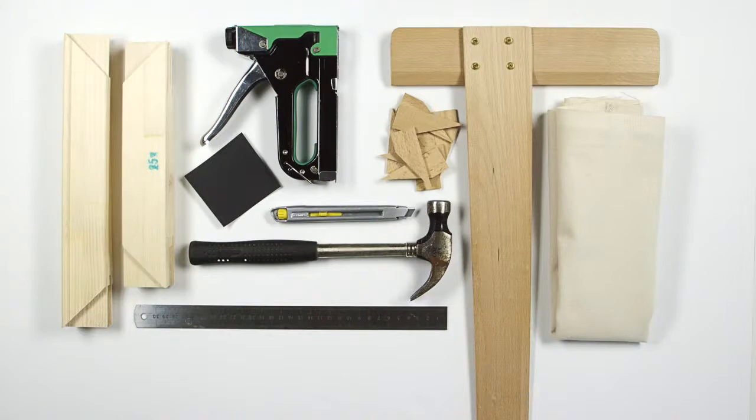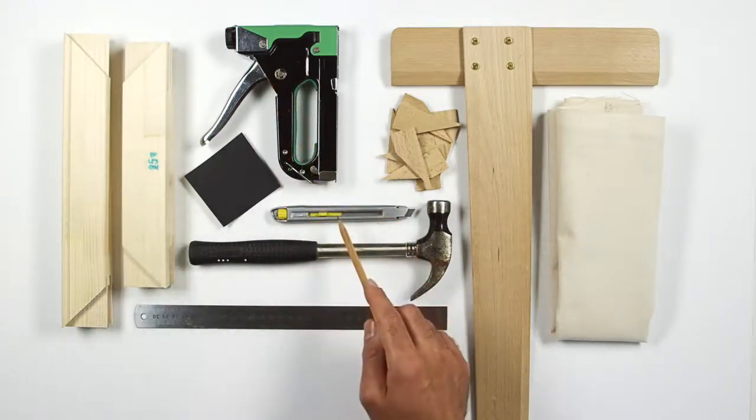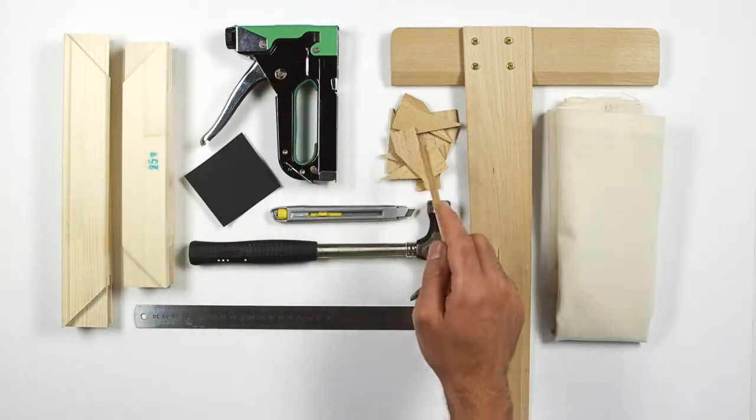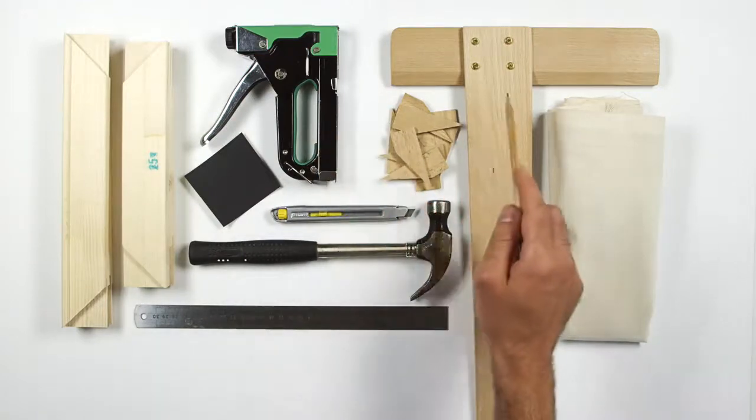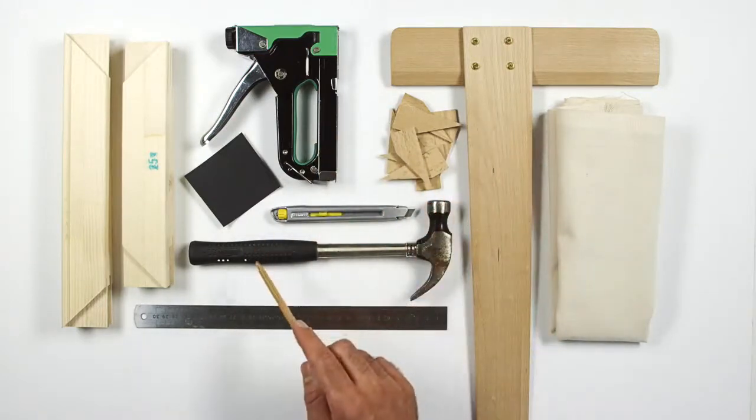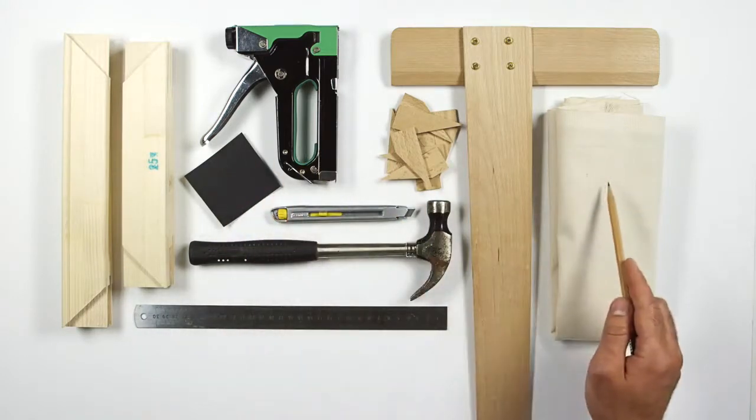Here we've got the materials you'll need to stretch a small canvas. We have the stretcher bars, a heavy-duty staple gun, scissors or a craft knife, wooden wedges that will usually be free when you buy the stretcher bars, a set square, a hammer, a ruler, sandpaper, and the canvas or linen of your preference.